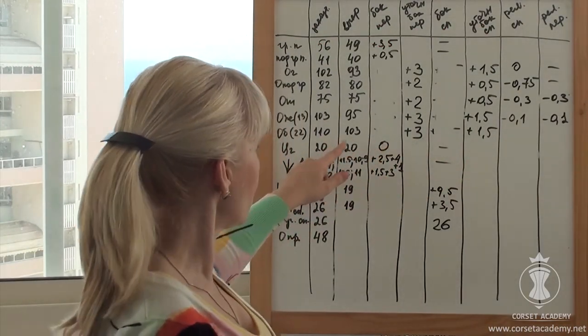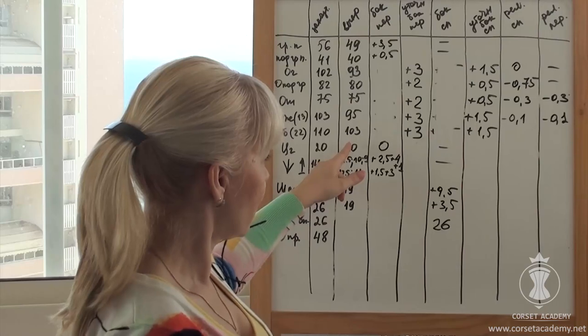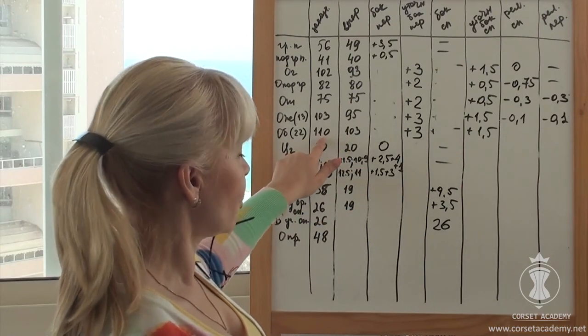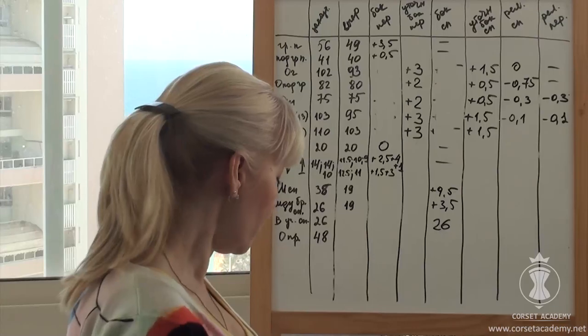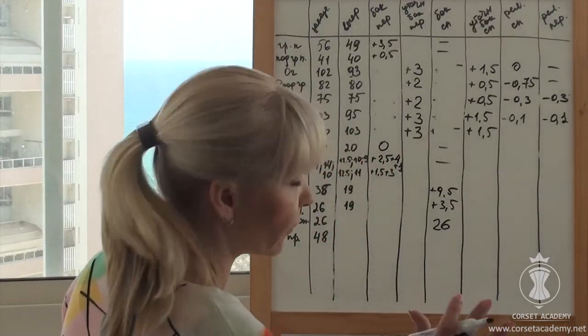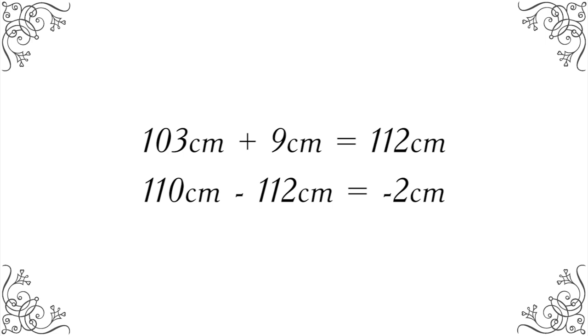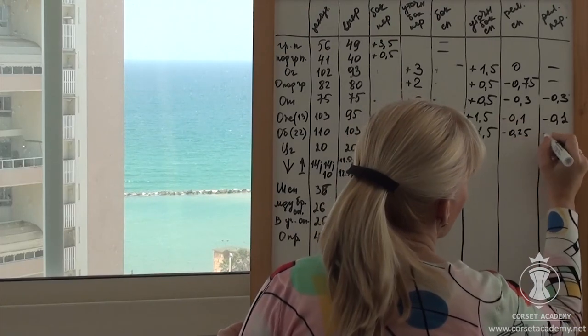Hip circumference. It is 110 cm on the client and 103 cm on the pattern. We have expanded the pattern by 3 cm from each side, 6 cm, and by 1.5 cm from each side, 3 cm, which makes 9 cm total. 103 cm plus 9 cm equals 112 cm. 110 cm minus 112 cm equals negative 2 cm. There are two extra cm that need to be removed from the pattern. This 2 cm will also be distributed between 8 raw edges of all princess seams. We need to deepen each princess seam by 0.25 cm in the hips.